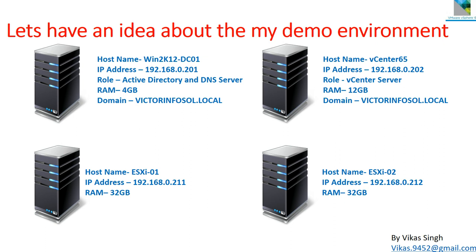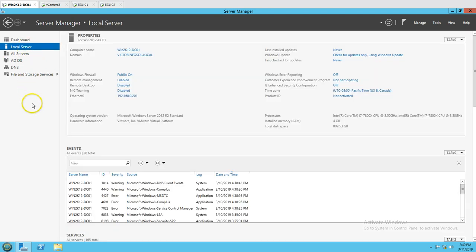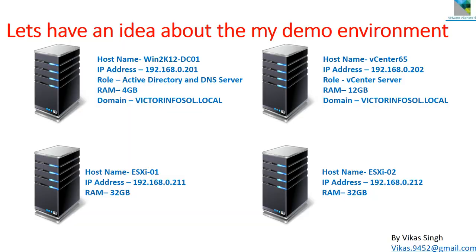We have four servers. The first machine is win2k12dc01, which is my Active Directory and DNS server. The IP address of my domain controller is 192.168.0.201 and my domain name is victorinfosol.local. You can see my Active Directory and DNS services are running, and the hostname is win2k12dc01.